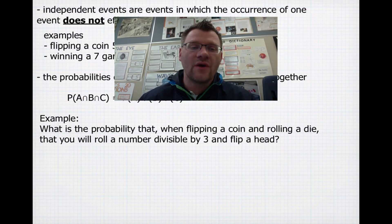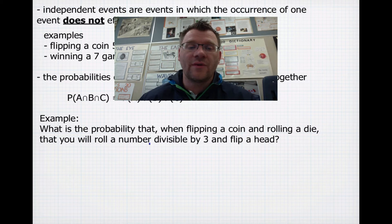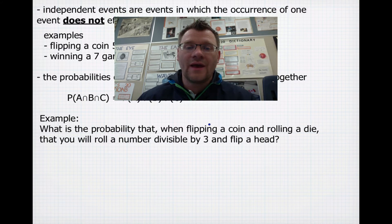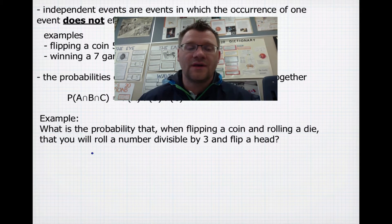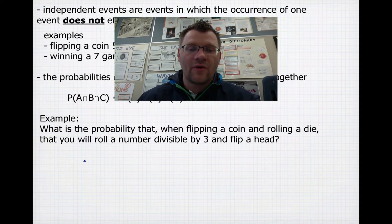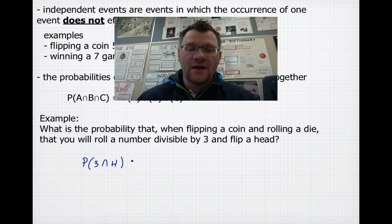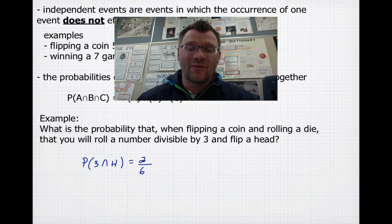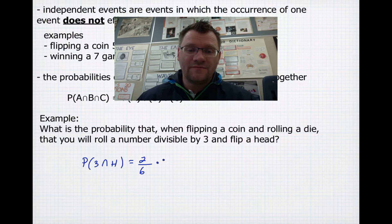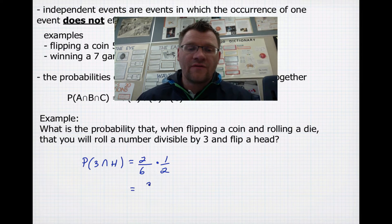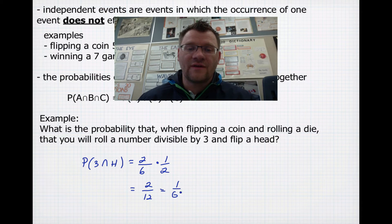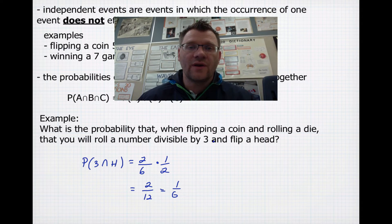So our first example is, what is the probability that when flipping a coin and rolling a die, that you will roll a number divisible by 3 and flip a head? So these events are independent. One does not have any effect on the other. So the probability of rolling a number divisible by 3 and a head would be, well, there's only two numbers out of 6 when you roll a dice that are divisible by 3. That's 3 and 6. And if you flip a head, that's a 1 in 2 chance. So you have 2 in 12 chances or a 1 in 6 chance that if you were to roll a die and flip a coin both at the same time, that you're going to roll a number divisible by 3, so a 3 or a 6, and flip a head at the same time.